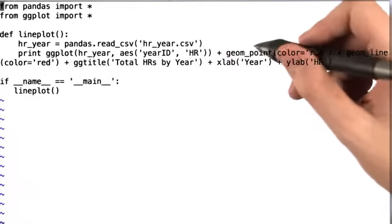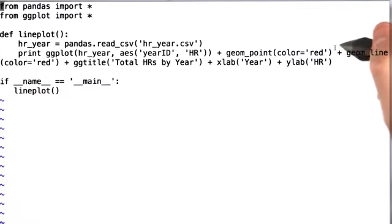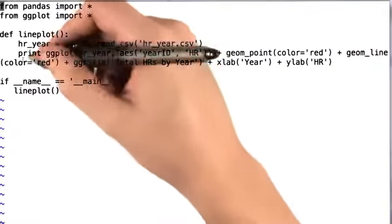Then we add geometric points with the color red, then we add geometric lines with the color red.